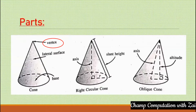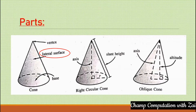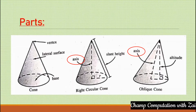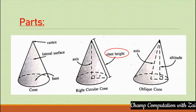So these are the parts of a cone. We have the vertex at the tip of the figure, the lateral surface, and the base, which is the circle. The axis goes from the vertex to the middle of the base. The slant height goes from the vertex down to the base edge.